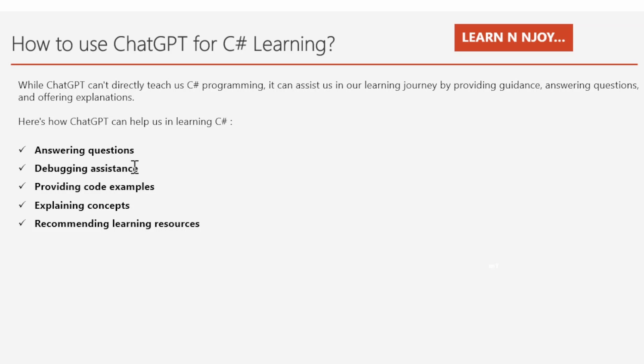Number two — debugging assistant: if you encounter an error or bug in your C# code and are not sure how to fix it, you can describe the issue to ChatGPT and it may help you identify the problem or suggest possible solutions. Number three — providing code examples: if you are struggling with a particular C# concept or need to see how to implement something, you can ask ChatGPT for code snippets or examples to clarify your understanding.